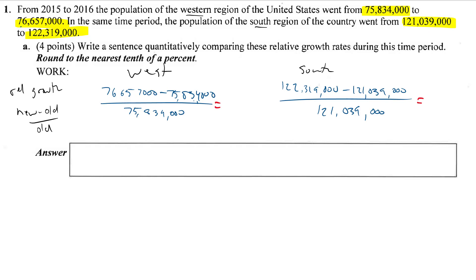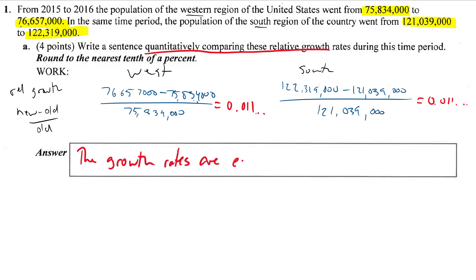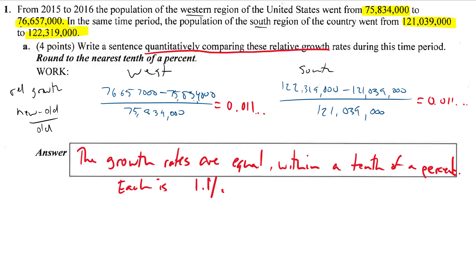What we're going to get out of this is a number that looks like 0.01-something for one and 0.011-something for the other. What we're looking for is an answer that quantitatively compares those relative growth rates. The growth rates are equal within a tenth of a percent — each is 1.1%.